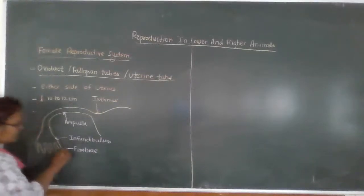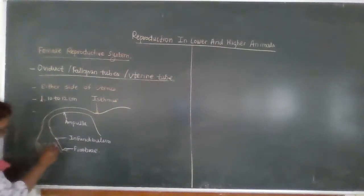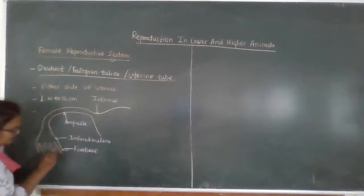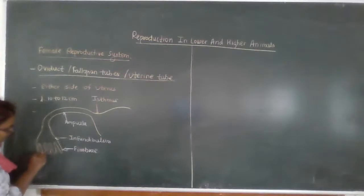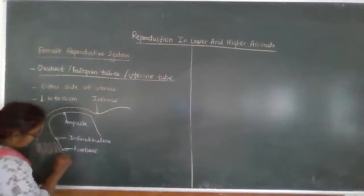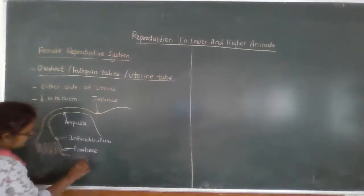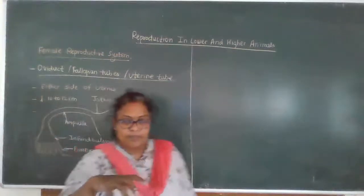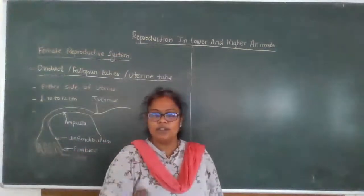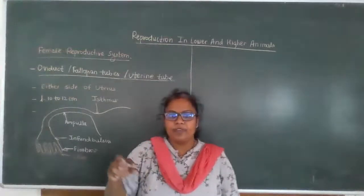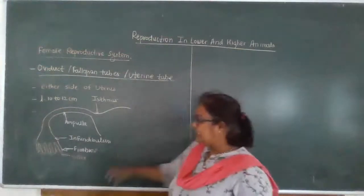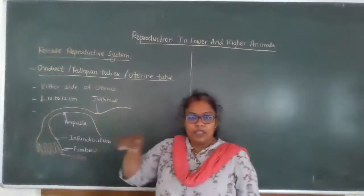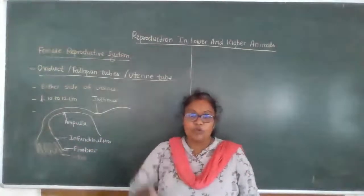These fimbriae have ciliated epithelium — long hair-like structures called cilia. These cilia create an inward current when ovulation occurs. Especially, the fimbriae and infundibulum get stimulated when ovulation occurs.